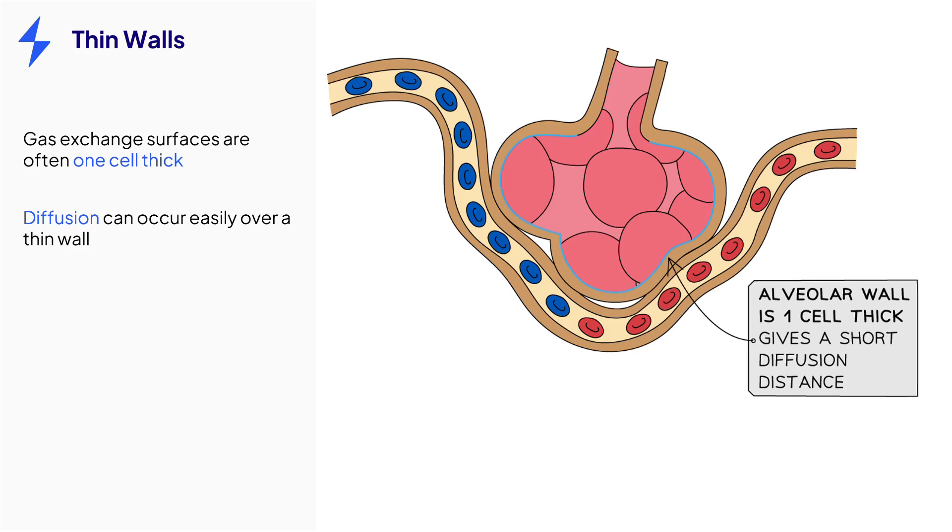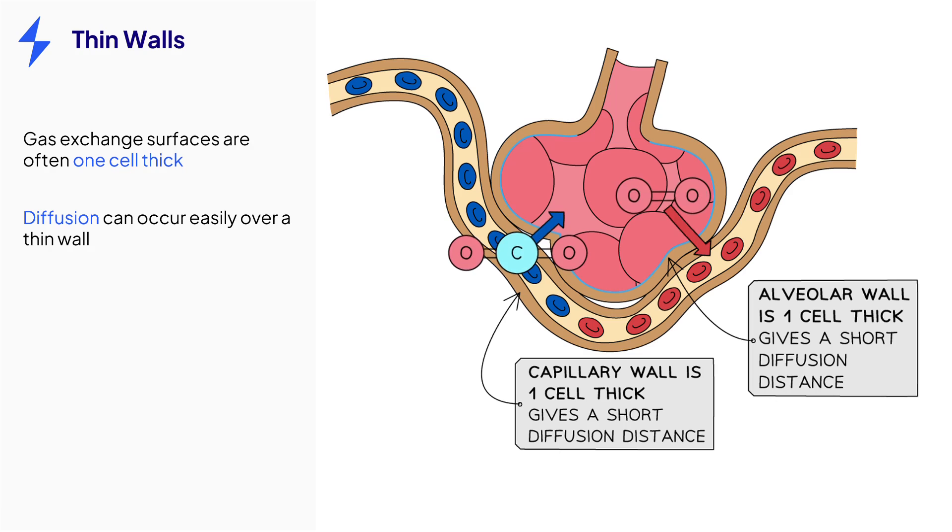The walls are only one cell thick, so it is really easy for oxygen and carbon dioxide to exchange here. The same goes for the capillaries that surround the alveoli. Their walls are only one cell thick, again creating a really short pathway for the diffusion of carbon dioxide and oxygen.